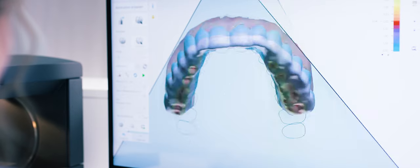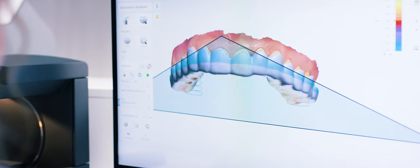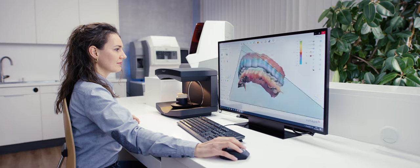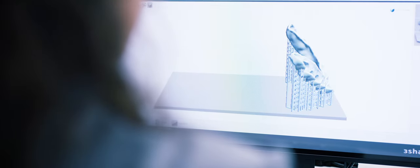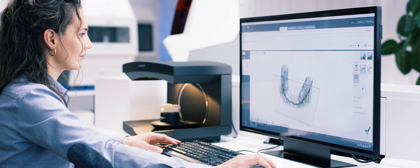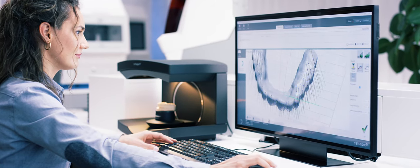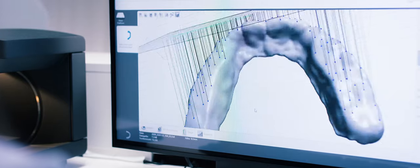The 3D scanning data is transferred to the 3Shape dental system where the splint is designed. Then the restorations are prepared for the 3D printing process using 3Shape Cambridge software. This software places the digital restoration on a virtual printing platform, provides the necessary support structures and slices the restoration into printable layers.